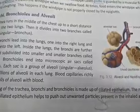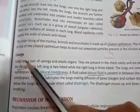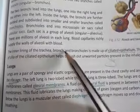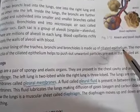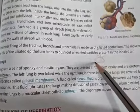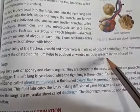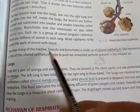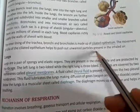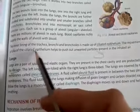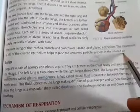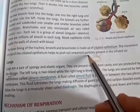Lungs are a pair of spongy and elastic organs. The inner lining of the trachea, bronchi, and bronchioles is made up of ciliated epithelium — cells that have hair-like structures on them. The movement of the cilia of the ciliated epithelium helps to push outward any unwanted particles present in the inhaled air — whenever dust or dirt particles come inside, the cilia push them back outward.